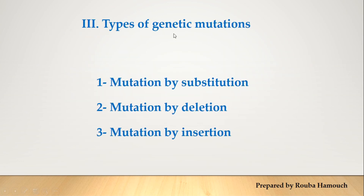What are the types of genetic mutations? We have three types: mutation by substitution — the replacement of one or more nucleotides by another; mutation by deletion — the loss of a nucleotide; and mutation by insertion — the addition of a nucleotide.